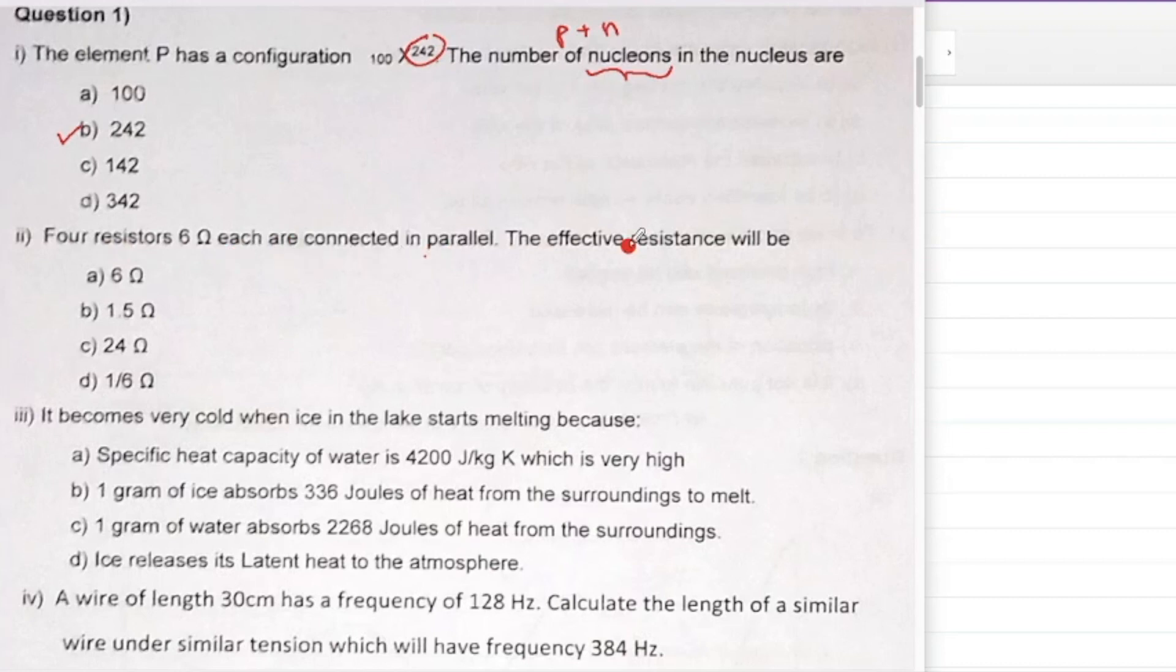Four resistors 6 ohm each are connected in parallel. The effective resistance will be - if they are connected in parallel, remember the formula is Rp equals R upon n, so it will be 6 upon 4 which is 1.5, correct, 3 by 2.